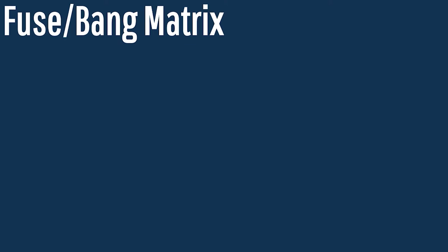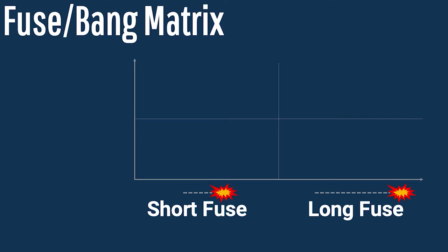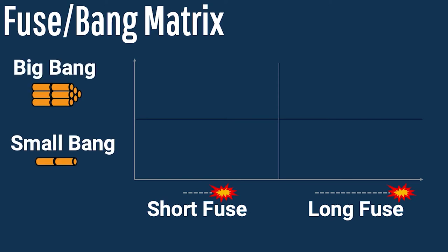The fuse and bang matrix has two dimensions: a horizontal axis and a vertical axis. The horizontal axis represents the fuse, and the fuse is either short or long. A short fuse means that the impact is going to arrive quite quickly, whereas a long fuse means the impact is going to arrive over a much longer period of time. On the vertical axis is either a small bang or a big bang, illustrated by the numbers of sticks of gunpowder.